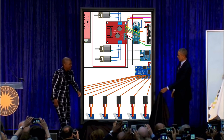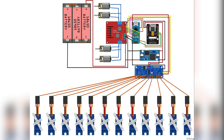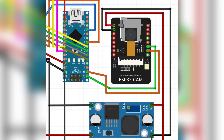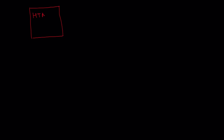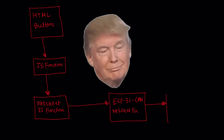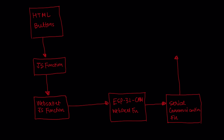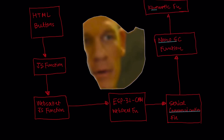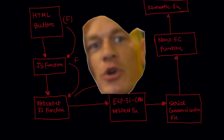Every engineer wants one thing: a working, complete circuit diagram — and you'll find it in my GitHub repository to use as a reference. Now let's talk about the software and code flow. It all starts from an HTML button click, which triggers an internal JavaScript function. That function does some calculations if needed, then calls the JavaScript WebSocket function, which calls the C++ WebSocket function on the ESP32-CAM. The ESP32-CAM then calls its serial function to send the command, and the Arduino Nano's serial function receives that command and sends it to the kinematics code.